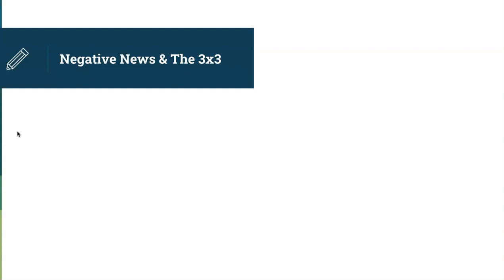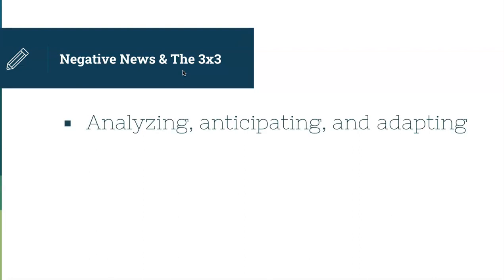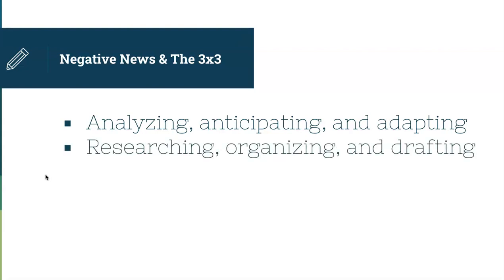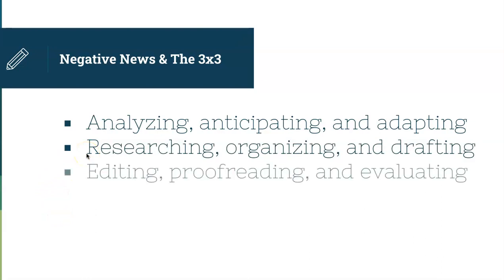The textbook recommends using the three-by-three writing process when composing messages that contain negative news. As a refresher: the first phase is analyzing, anticipating, and adapting — really breaking down who your audience is, what they want, how this message is going to be perceived by them, and how it's going to affect them. The second phase is researching, organizing, and drafting. The third phase is editing, proofreading, and evaluating.